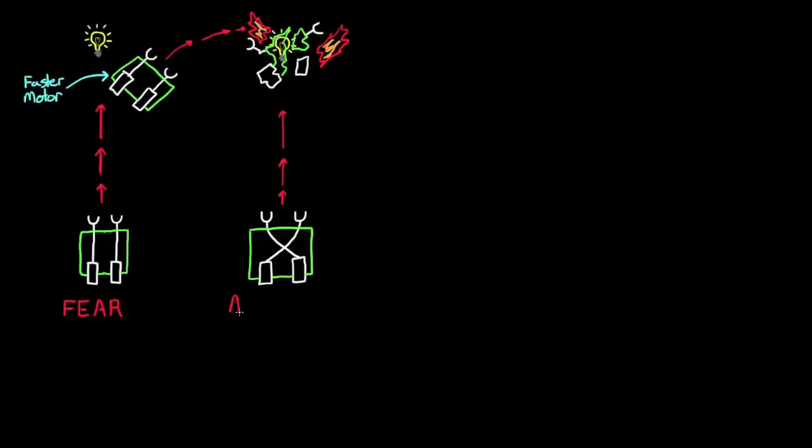Breitenberg referred to these two vehicles as fear and aggression, and although their behavior is decidedly more complex than the first vehicle we built, they are exhibiting traits that are less than desirable. I mean, who wants a robot that only knows how to be afraid, or how to be angry? We can create a more loving and caring robot by switching the signs between the sensors and motors, which will slow the motor down when the sensor is stimulated and give our robot a more calming demeanor.